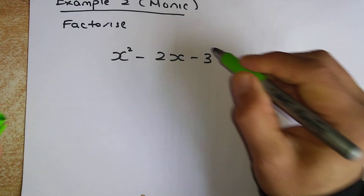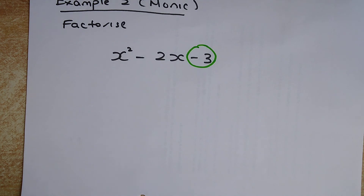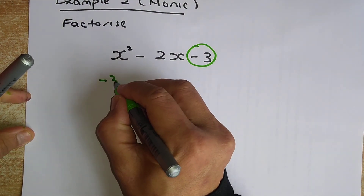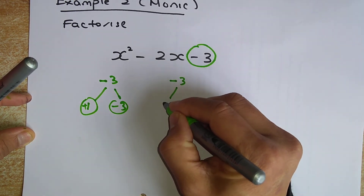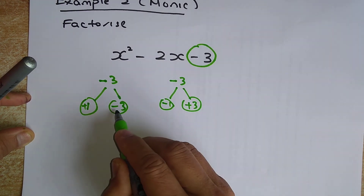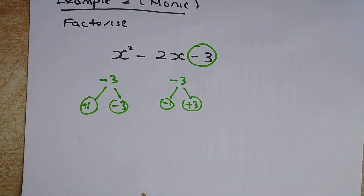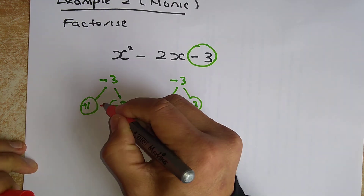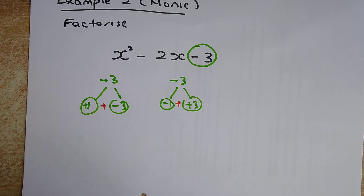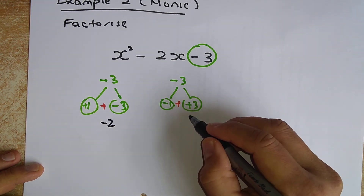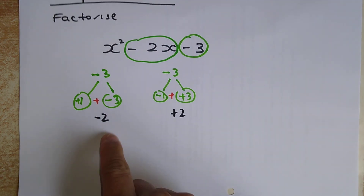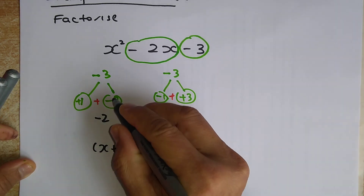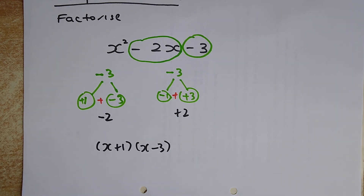Now a second monic example. Looking at the constant 3, there are only two factor pair options: plus 1 and minus 3, or minus 1 and plus 3. When you add them: 1 plus negative 3 gives negative 2, and minus 1 plus 3 gives positive 2. The middle term here is minus 2x, so we need negative 2. The correct bracket form is x plus 1 times x minus 3.